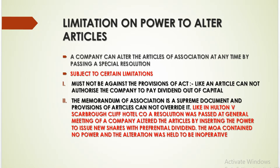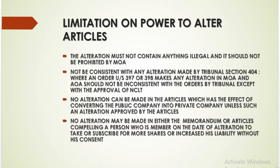Now we will see what are the limitations on the power to alter the articles. A company can alter the article of association at any time by passing a special resolution, but this right is subject to certain limitations. The alteration must not be against the provisions of the act — for example, an article cannot authorise the company to pay dividend out of capital. The memorandum of association is a supreme document and the article of association is subordinate to it, so the provisions of the article cannot supersede the provisions of the memorandum of association.